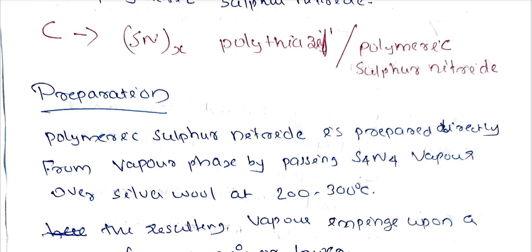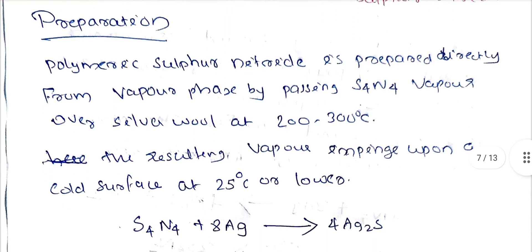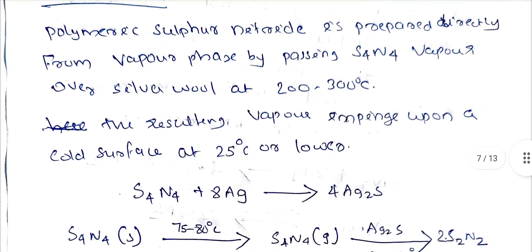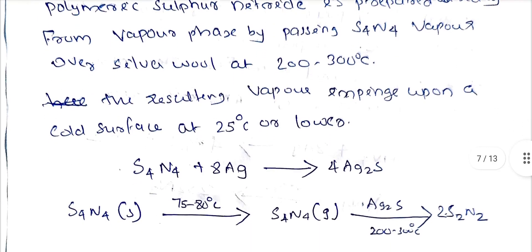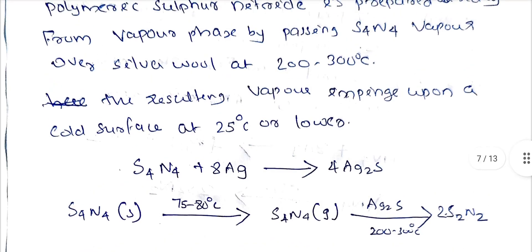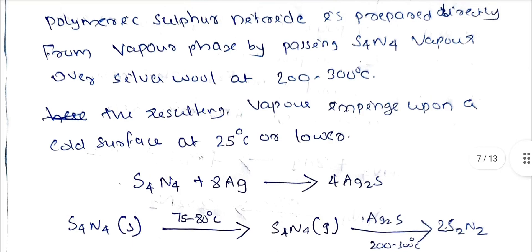Next is polymeric sulfur nitride, or polythiazyl (SNx). Polymeric sulfur nitride is prepared directly from the vapor phase by passing S4N4 (tetrasulfur tetranitride) vapor over silver foil at 200 to 300 degrees Celsius. The resulting vapor is then impinged onto a cold surface at 25 degrees Celsius or lower.